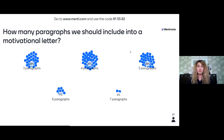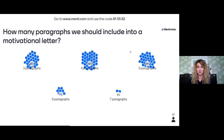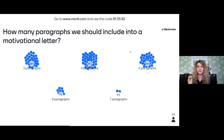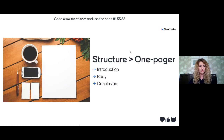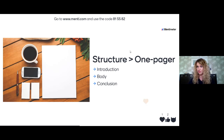Bullet points are sometimes okay, especially if you think carefully about what you want to mention. But your CV already has those concrete bullet points and facts, so your motivational letter shouldn't be just bullet points — it should be your story. I really advise writing in paragraphs. A motivational letter is a one-page writing — a one-pager. You should definitely not write more than one page. The structure is simple: introduction, body, and conclusion.